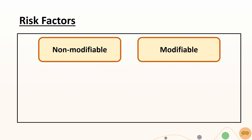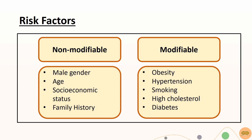Risk factors can be split into non-modifiable and modifiable. Non-modifiable factors include male gender, older age, lower socioeconomic status, and family history. Modifiable factors include obesity, hypertension, smoking, high cholesterol, and diabetes.